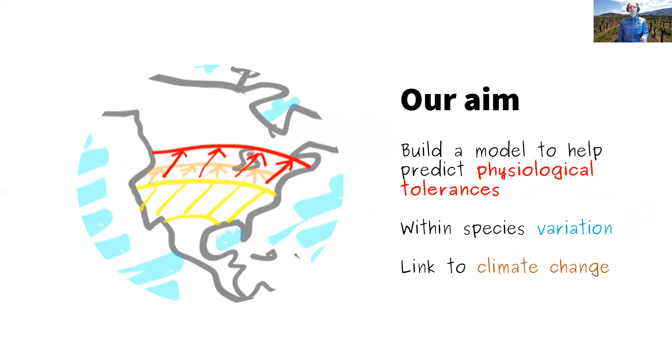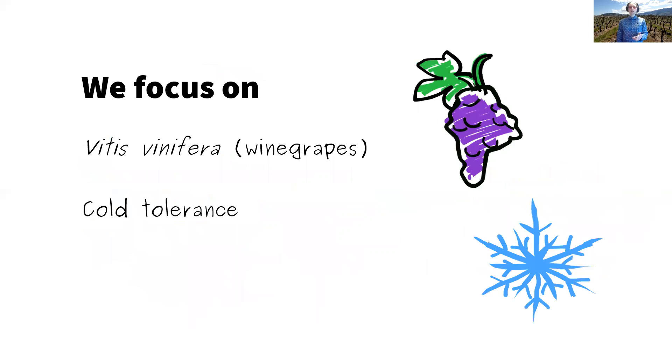So our aim in this study first is to build a model to help predict physiological tolerances in woody species specifically, and also to drill down into the potential effect of varieties or variation within a species, and we'd like to link that eventually to climate change. We're focusing on the crop species Vitis vinifera, so wine grapes, and we're using cold tolerance as our physiological tolerance to climate factor.